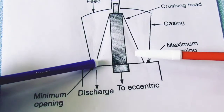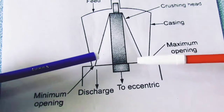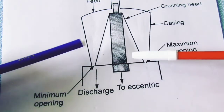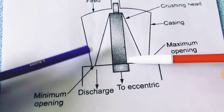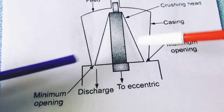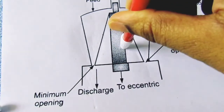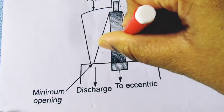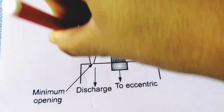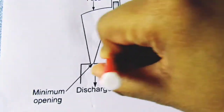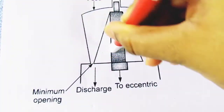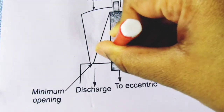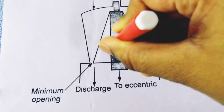We decide the speed on the base — gyration per minute. What is gyration per minute? It will move like this, rotate and move. It will rotate like this too. When it moves like this, it will also rotate. So we call it gyration per minute.